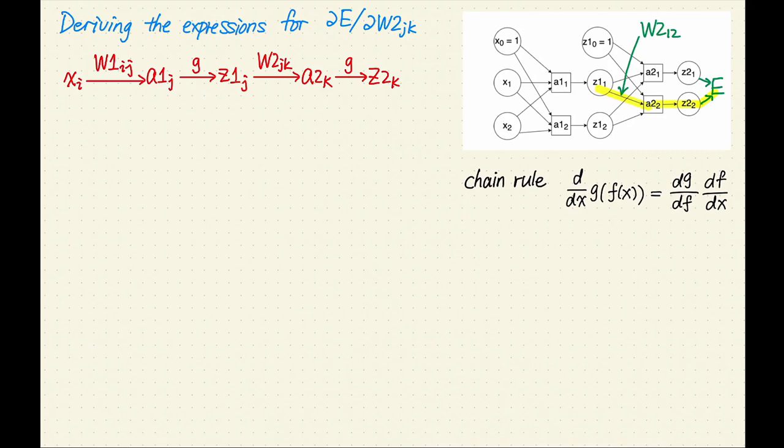Taking the derivative of the final expression with respect to x is equivalent to taking the derivatives of the functions in reverse order, from the last one applied to the first one applied. I often think of this process as peeling off the functions one by one. For our example, the derivative is equal to the derivative of g with respect to f, multiplied by the derivative of f with respect to x.